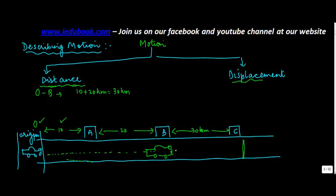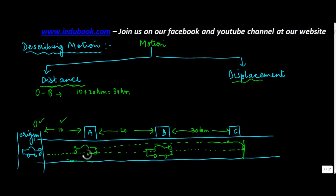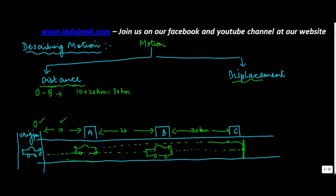Now suppose this car went further, touched the point C and then moved backward in this direction, and it came back and reached point A. Now in this case, if I were to ask you between O and A what is the distance, how much will be the distance?